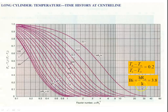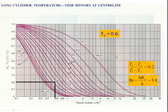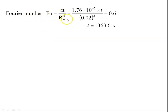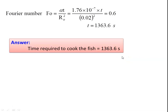With temperature ratio 0.2 and Biot number 3.8, we use the Heisler chart for the long cylinder temperature–time history at the centerline. Draw a horizontal line at 0.2 — it intersects the Bi = 3.8 curve. Drawing a vertical line down gives a Fourier number of 0.6. From Fo = α·t/R₀²: 1.76 × 10⁻⁷ × t / (0.02)² = 0.6, solving gives t = 1363.6 seconds. The time required to cook the fish is 1363.6 seconds.